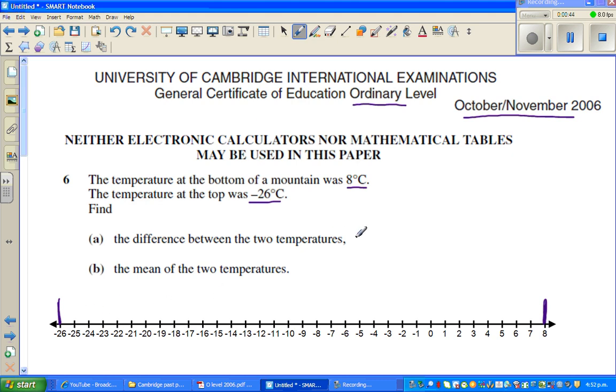To understand the difference, from minus 26 to 0 degrees you have a difference of 26 degrees. And from here to here you have a difference of 8 degrees centigrade.